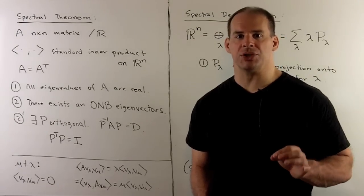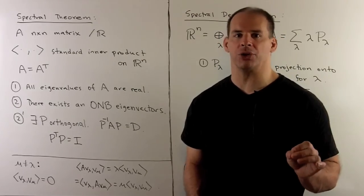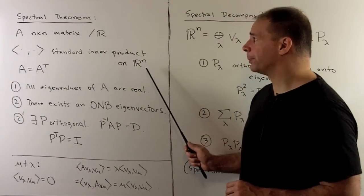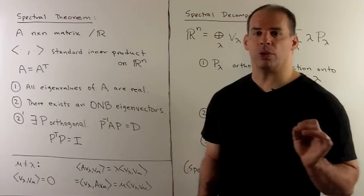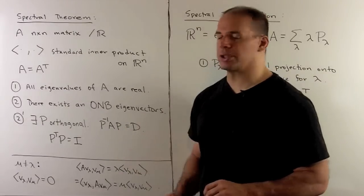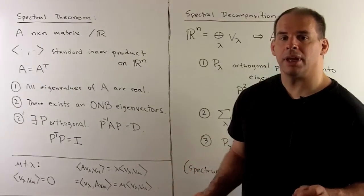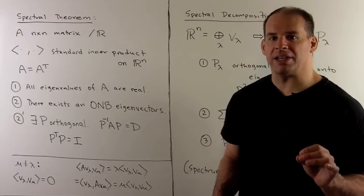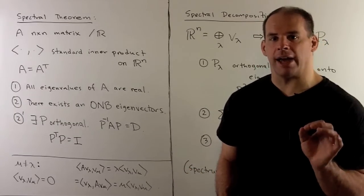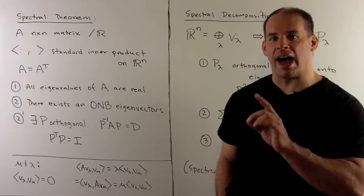Let's look at an example of spectral decomposition. First, we'll review the spectral theorem for real symmetric matrices. We have our standard inner product on R^n. A is an n-by-n matrix with real entries, and A is symmetric, so A equals A transpose. The spectral theorem states all eigenvalues of A are real, and there exists an orthonormal basis of eigenvectors for A. The second statement is equivalent to saying there exists an orthogonal matrix P such that P puts A into diagonal form.